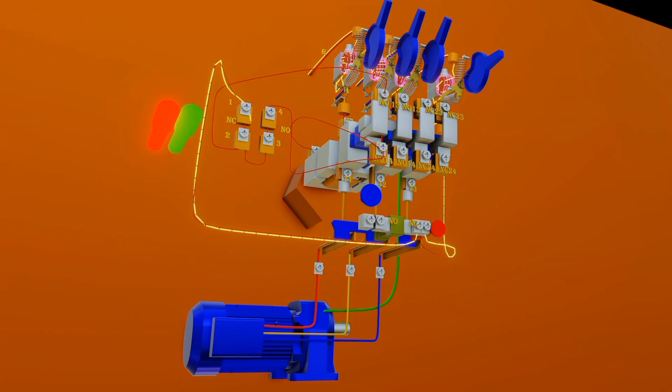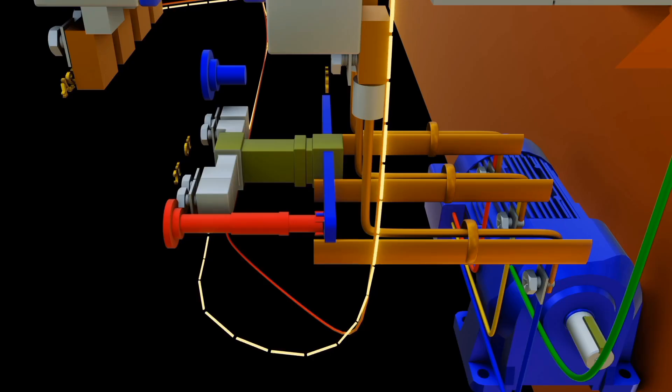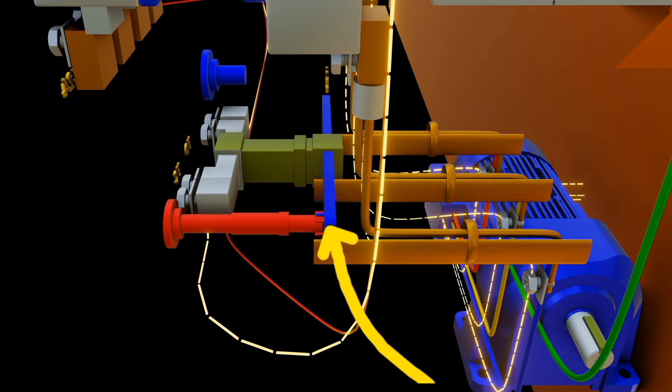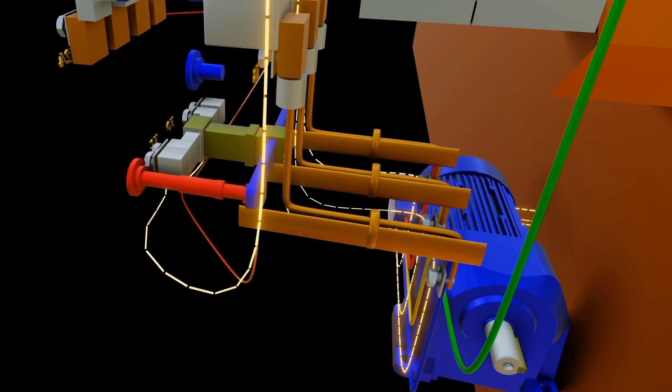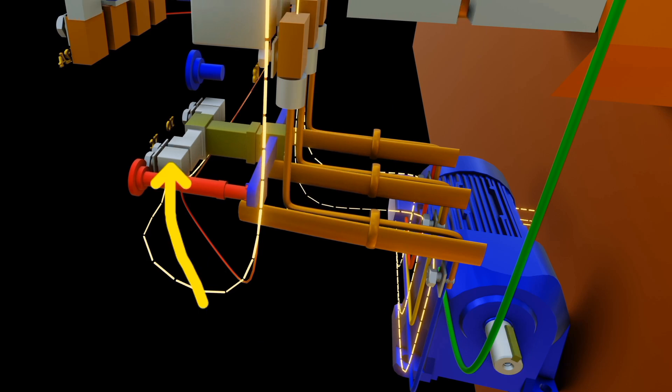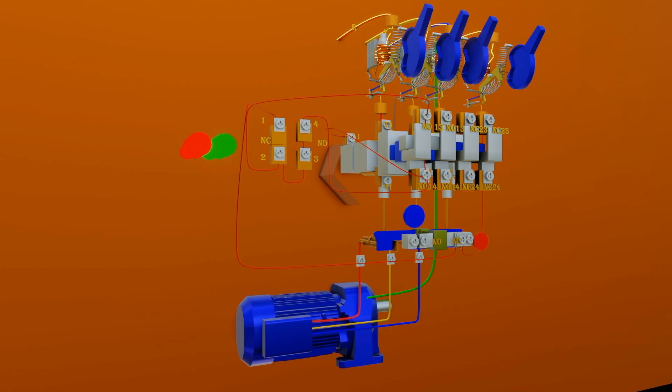But remember that these wires were first connected to normally closed of the thermal overload relay. As you have said before, that if the overload occurs, the bimetallic strip bends moving the contacts so that normally closed opens and normally open closes. This helps in the motor protection against overload that circuit breaker could not sustain.